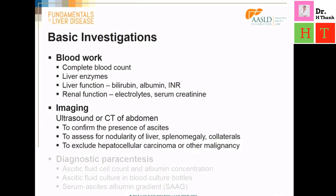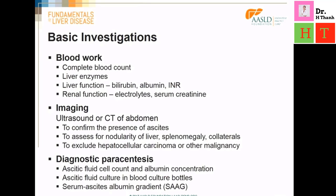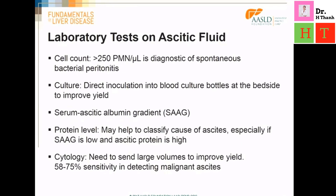All patients with cirrhosis and ascites should also undergo a diagnostic paracentesis. A diagnostic paracentesis is required to exclude the presence of spontaneous bacterial peritonitis. If spontaneous bacterial peritonitis is present, the polymorphonuclear cell count in the ascitic fluid is usually higher than 250 cells per microlitre. An elevated cell count is sufficient for the diagnosis. However, we also culture the ascitic fluid to identify the offending organism and obtain antibiotic sensitivity.